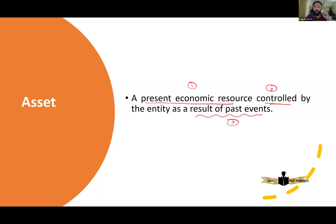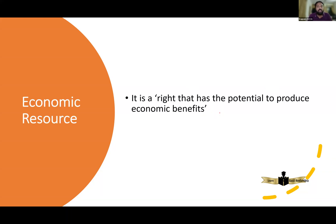There are three things in this definition. One: present economic resource. Second: control. Third: past event. What do you mean by present economic resource? Economic resource means it has the potential to produce economic benefit. A machine is an economic resource because by using that machine, the entity will be producing a product, selling that product, and earning cash flows from it.